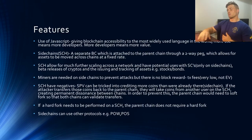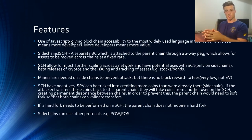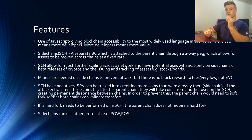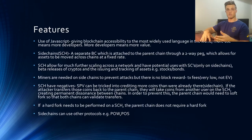Lisk also uses something called sidechains. Sidechains are a separate blockchain attached to a parent chain through a two-way peg, which allows the transfer of assets between the parent chain and the sidechain. Sidechains allow for much further scaling across the network and they have potential uses with smart contracts — though to be clear, this is only on the sidechains, not the actual Lisk blockchain itself, which is not a smart contract platform. You can also use sidechains for beta releases of cryptocurrencies, and for the issuing and tracking of assets like stocks and bonds.